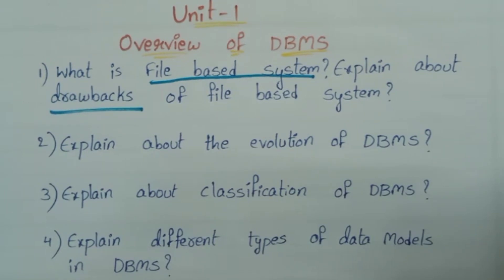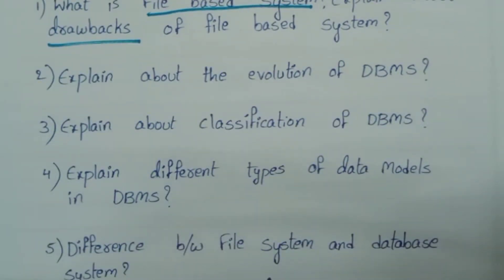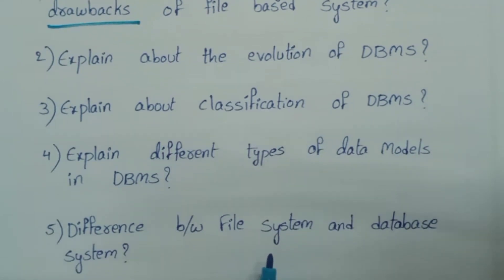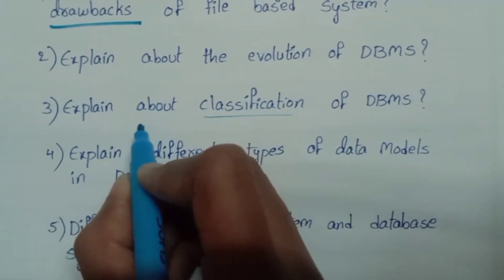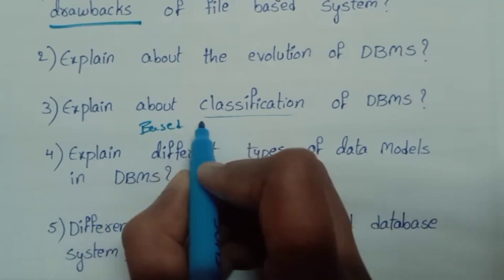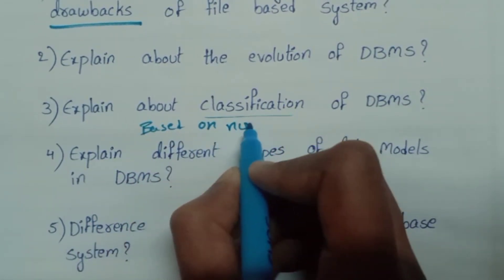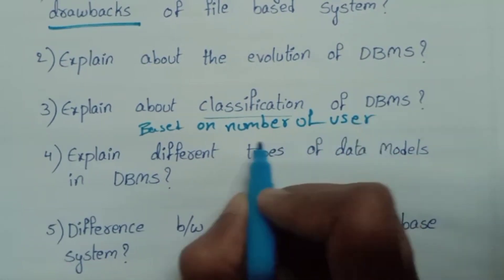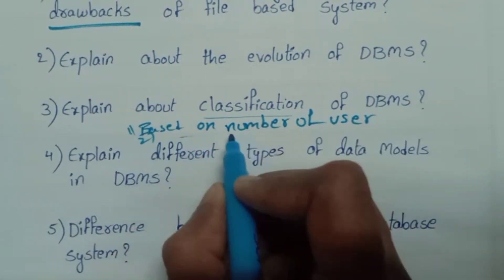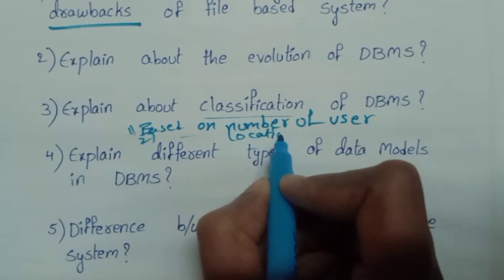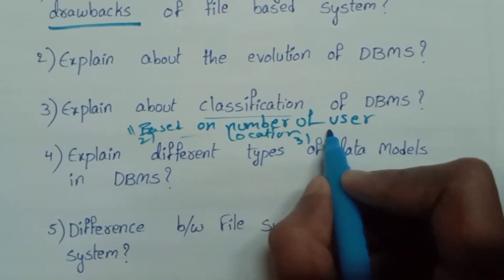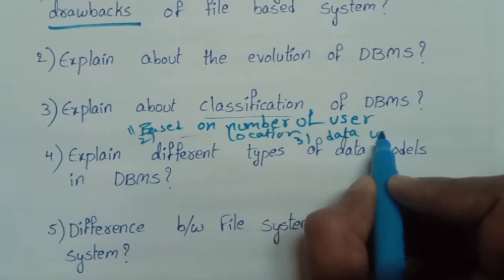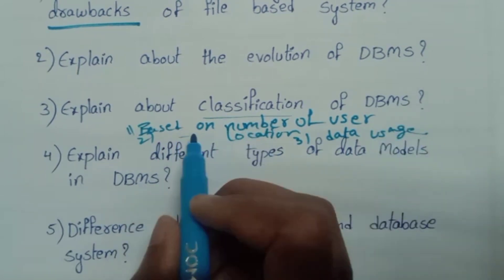Next, explain about the evolution of DBMS. Next, explain about the classification of DBMS. Classification is based on: number of users, based on location, and based on data usage. That covers the classification topic.